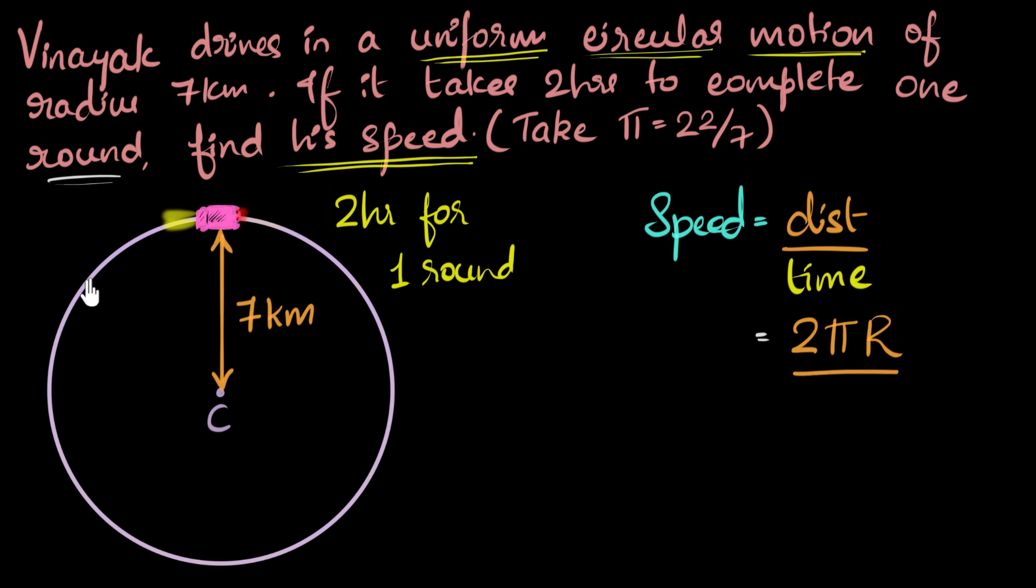And for that one entire round, we know the time. The time taken is two hours. So let's just write that down. Time is two hours. And of course, since the units are not in standard, we have hours and we have kilometers, we need to be careful. We'll just put the numbers with the units. And so if we substitute, let's write that down.